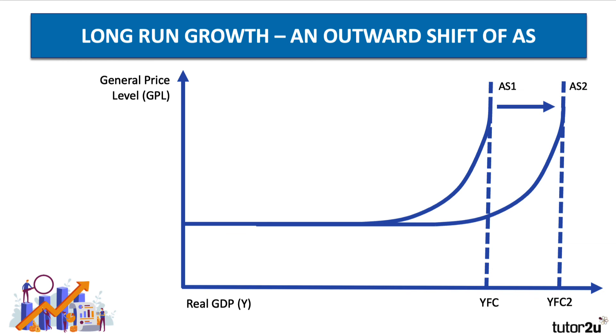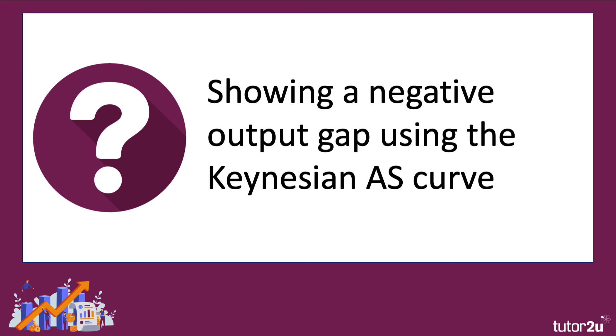Of course, you're hoping that over time the aggregate supply curve will shift outwards. This is an outward shift in Keynesian aggregate supply from AS1 to AS2 — and that, of course, is economic growth.